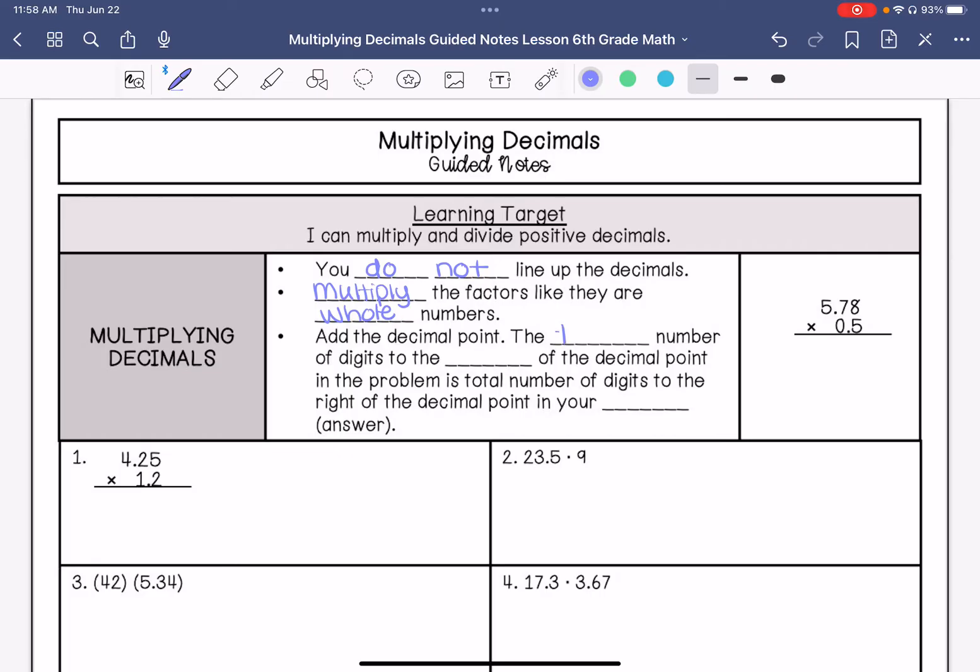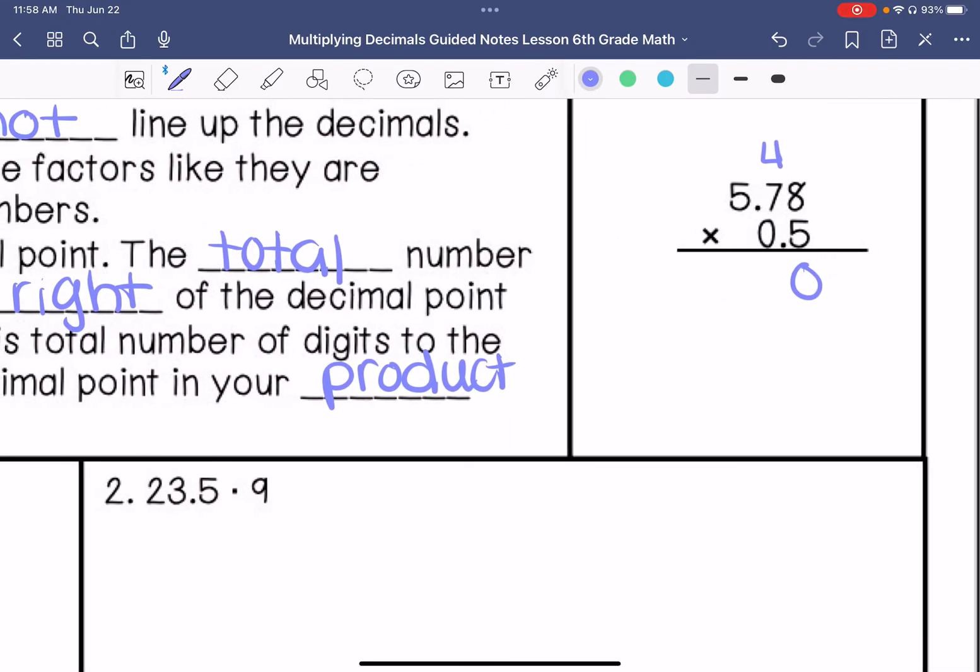So I am going to show you that in just a second. So I have already lined these up for you. 5 times 8 is 40. 5 times 7 is 35. Add that 4 is 39. 5 times 5 is 25 and this is 28. Alright, so I count 1, 2, 3. So I go 1, 2, 3. So this would be 2.89.